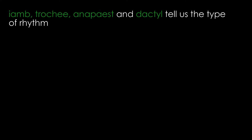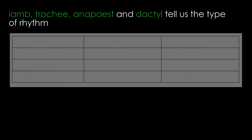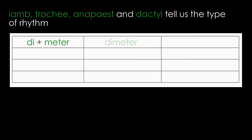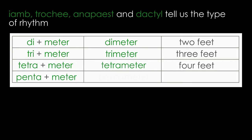There is also terminology related to how many of these feet are in a line, and it goes back to Greek again. If you look at the table, you'll see that di plus metre equals two feet, tri plus metre equals three feet, tetra plus metre equals four feet, and penta plus metre equals five feet.